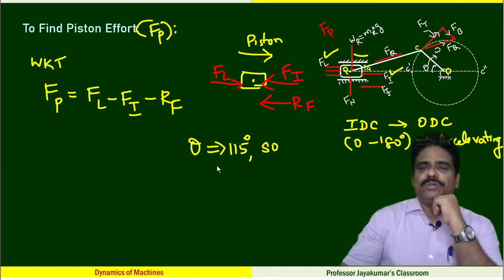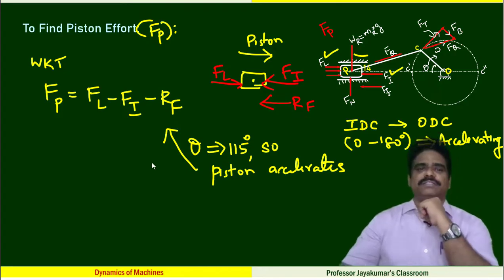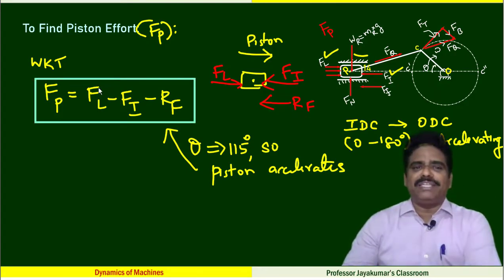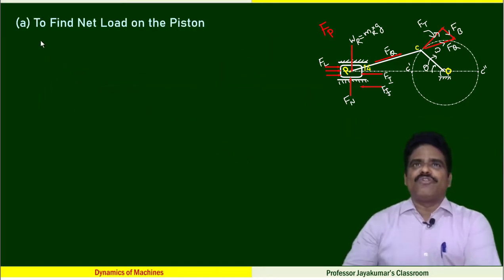Here θ equals 115 degrees, so piston accelerates. So this equation is valid. To find the FP, I will be determining FL and FI.